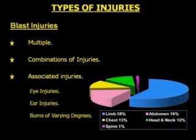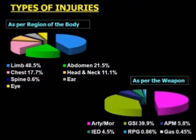Blast injuries are usually multiple and devastating, occurring in various combinations. Some of the blast victims had associated eye and ear injuries, and some had burns of varying degrees. The chart on the left shows the types of injuries by region of the body involved — the majority were limb injuries, followed by abdominal and chest injuries. The graph on the right shows injuries by causative weapon, where the majority are blast injuries followed by gunshot injuries.